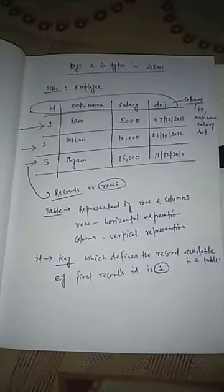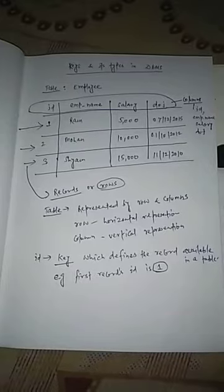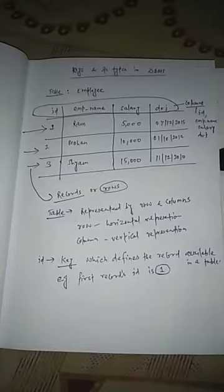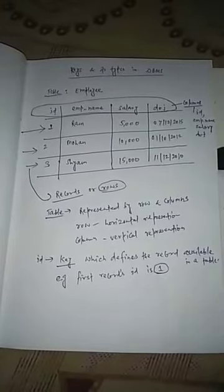While the id, imply name, salary, date of joining have been arranged in vertical manner, so it will be known as column. The key is that which defines the record available in a table.